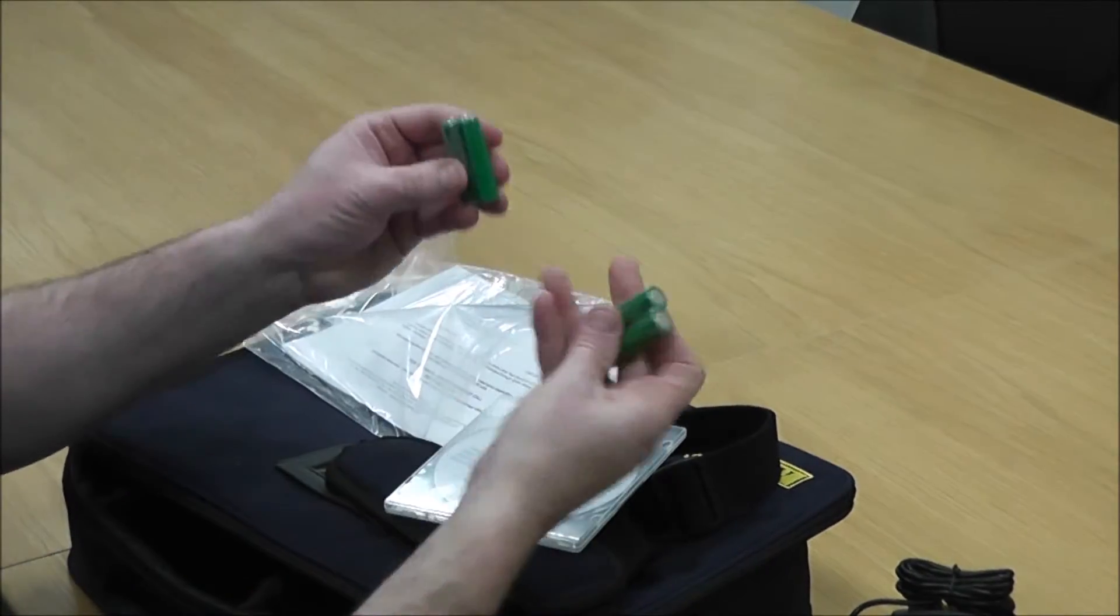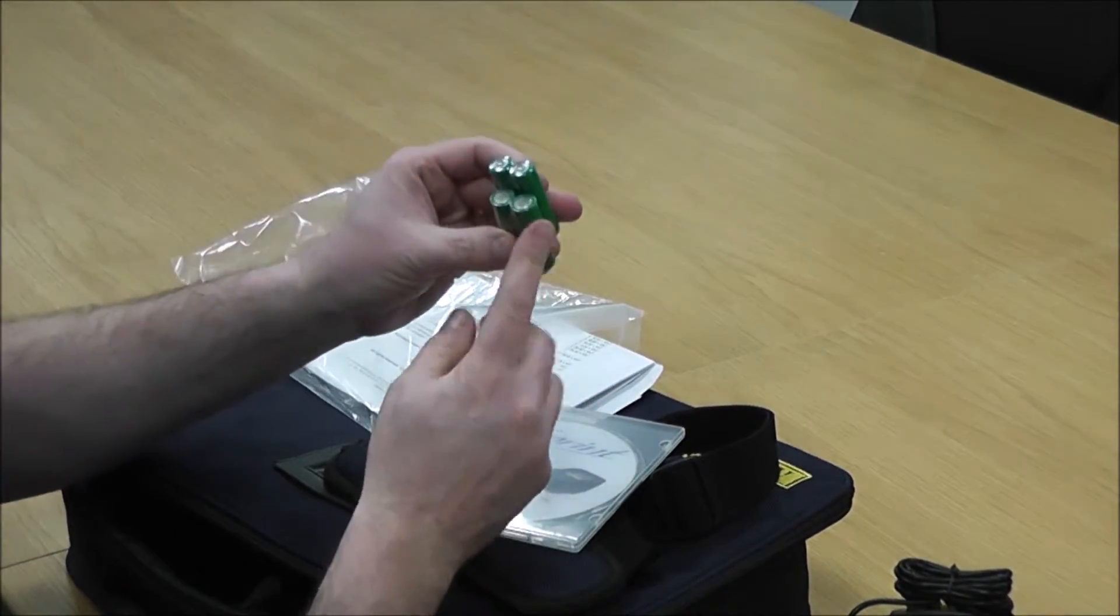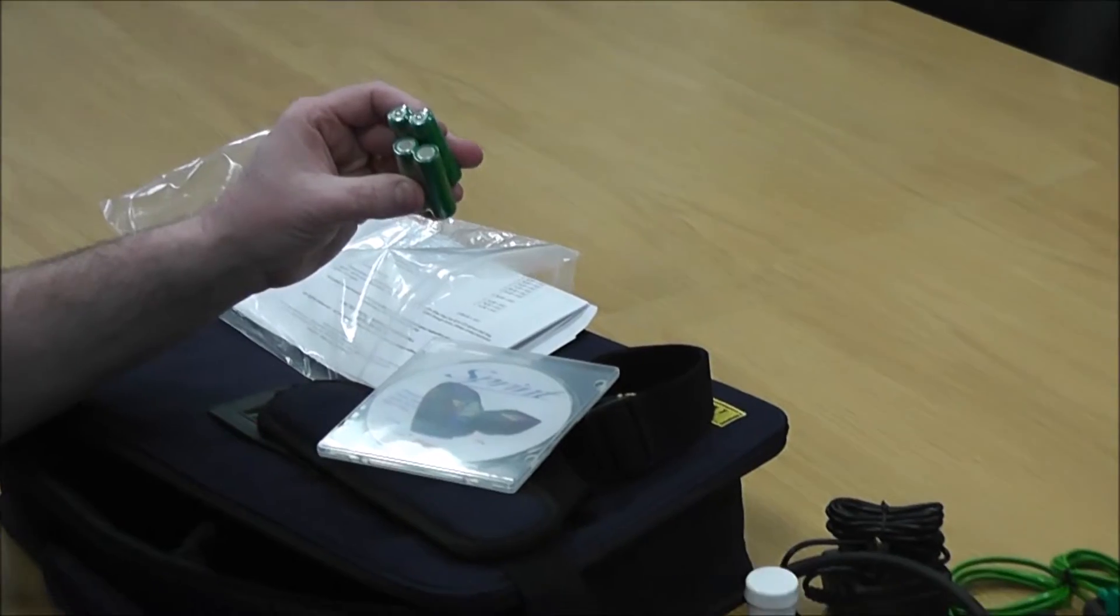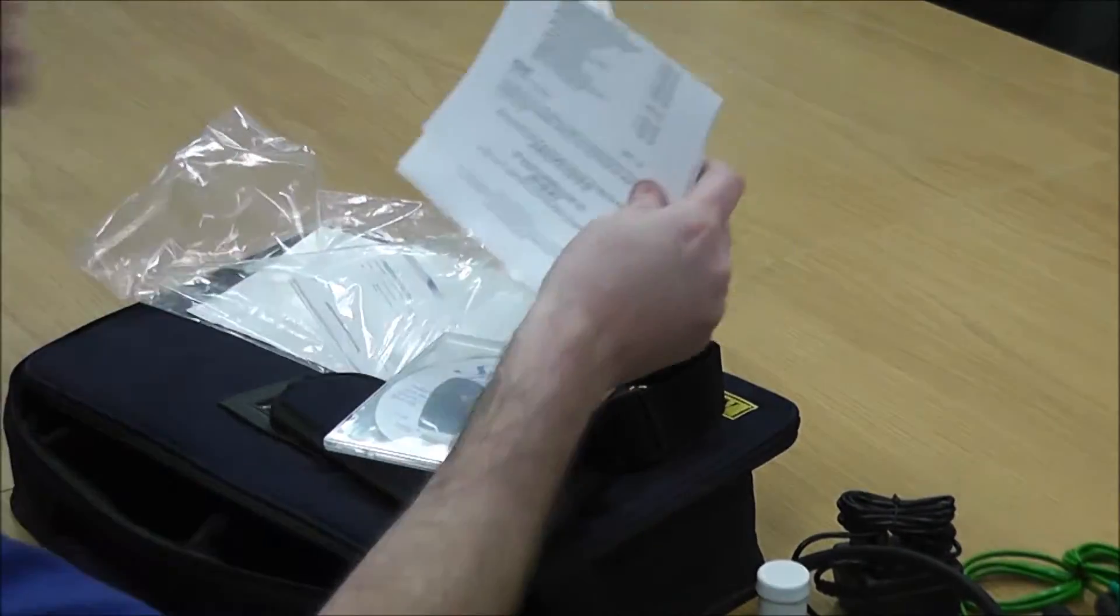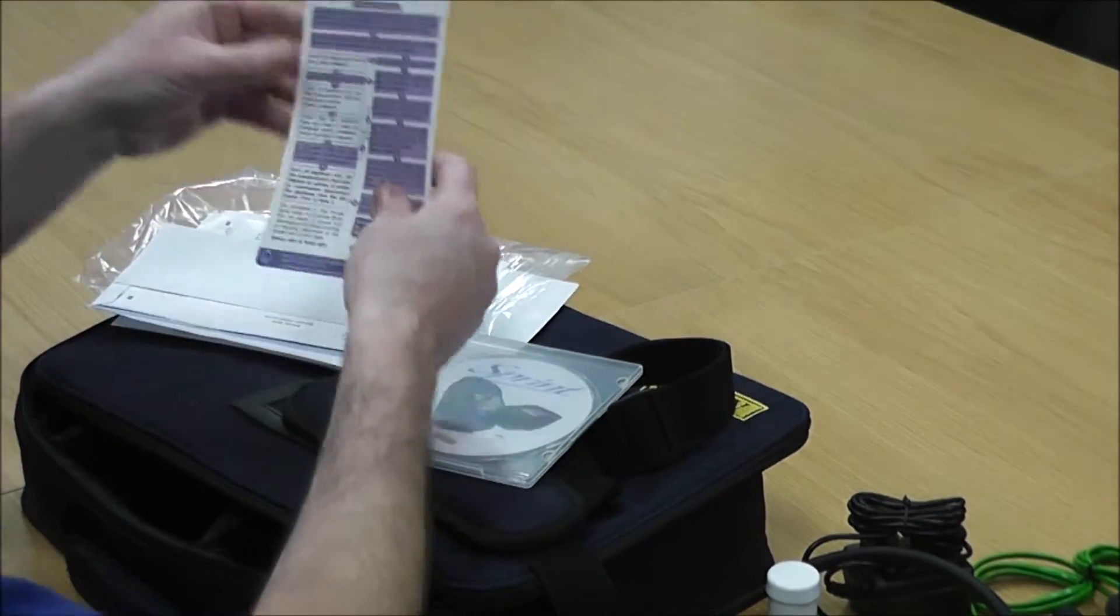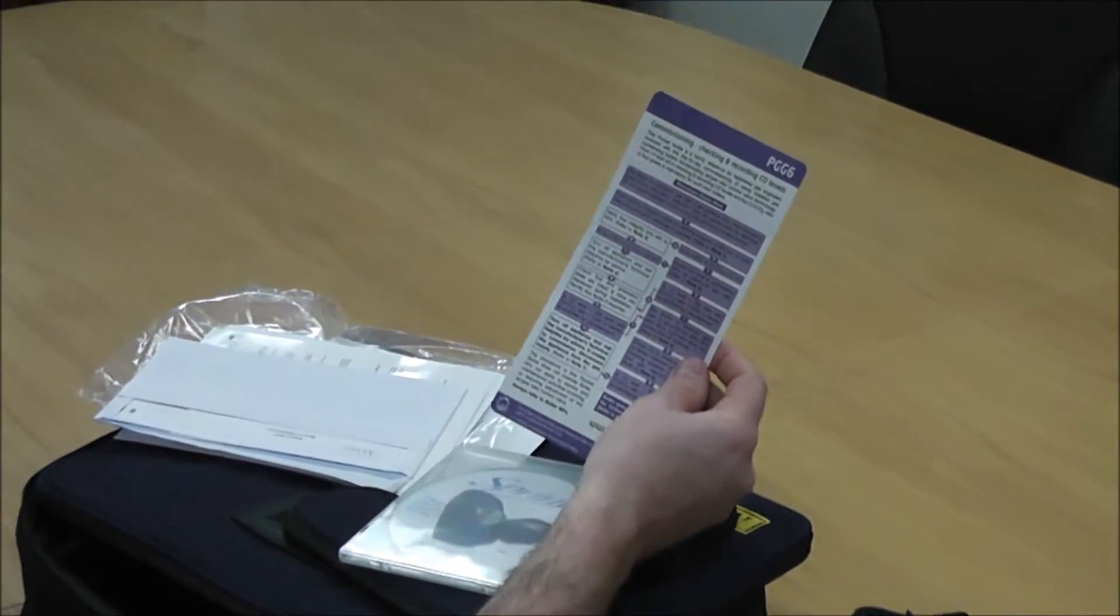You've got two batteries for the printer. If your printer doesn't work, that could be why—they need to be installed and charged initially for 16 hours. You also get a form to help you with commissioning.